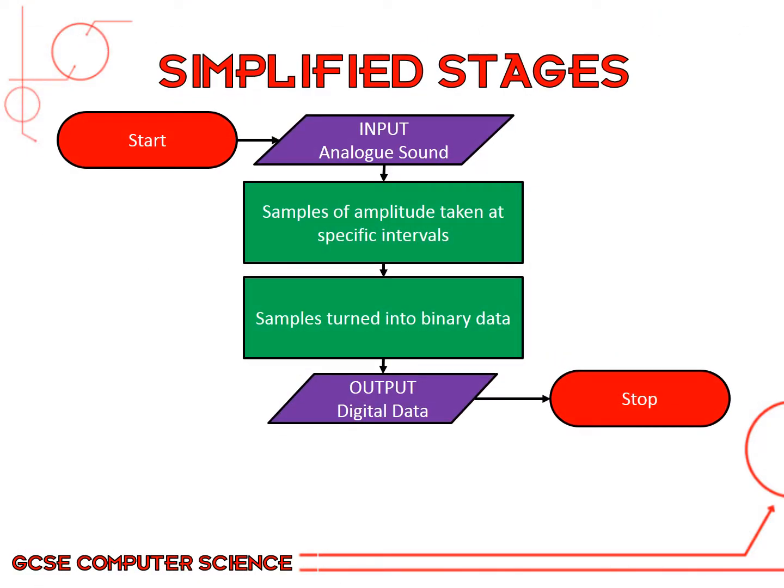Here is a simple flowchart showing the simplified stages of converting sound from an analog signal into digital data that a computer can read. We start by inputting the analog sound, then samples of amplitude are taken at specific intervals, those samples are turned into binary data, and the output is digital data.